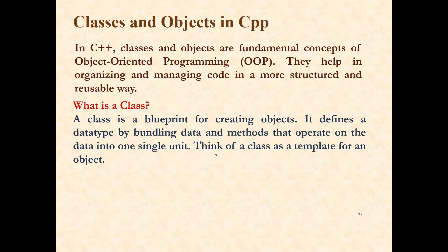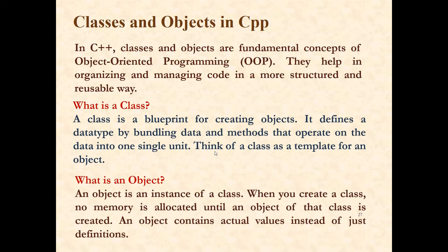Think of a class as a template for an object. What is an object? An object is an instance of a class. So when we define a class, we define a blueprint of the object. Object is associated with a class; object is an instance of a class. When you create a class, no memory is allocated until an object of that class is created. This is a very important thing — when we define the class, no memory is allocated. But when we create an object of that particular class, then only the memory allocation will be done. So an object contains the actual values instead of just the definition.